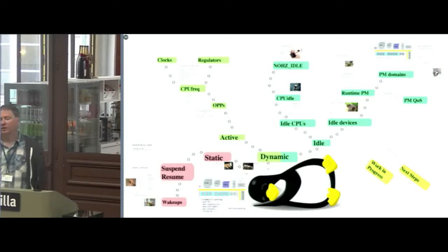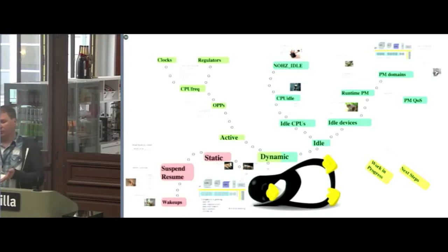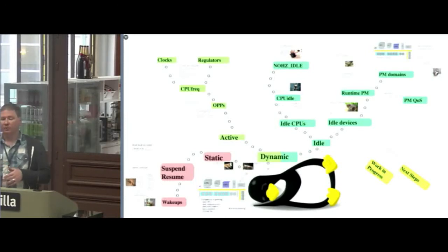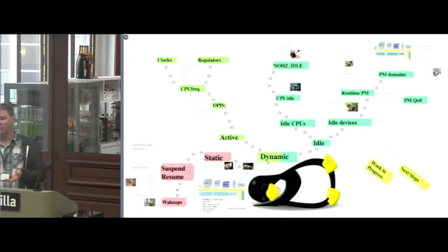Things like dynamic OPP management are typically handled by the CPUFreq governor, and there's also the concept of a CPUFreq policy. You might have a range of operating points and you can remove them dynamically. For example, in a thermal situation where you have a range of OPPs but if you run at the top one for too long you're going to overheat — a thermal driver can kick in and remove the highest-performing operating point for a little while until you cool down and then add it back. There are ways to do that with a combination of governors and thermal drivers.